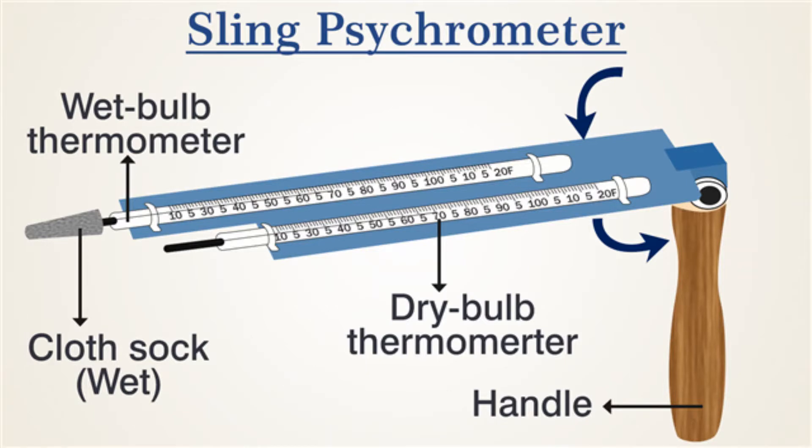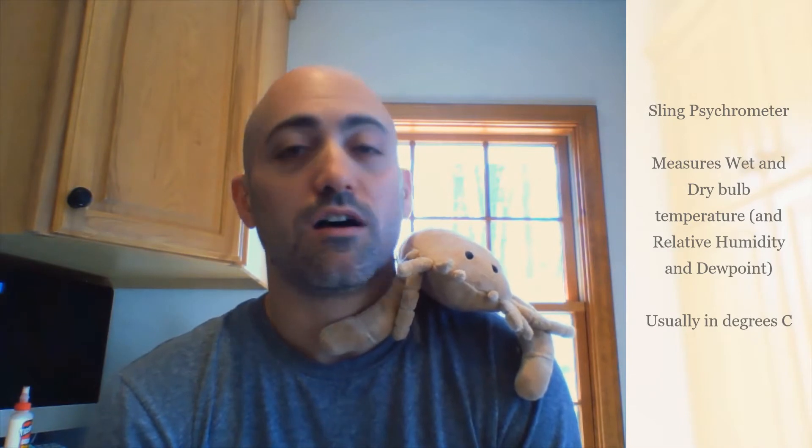Measuring temperature is the number one thing for weather forecasting. The second instrument is the sling psychrometer. It measures temperature too, but specifically the temperature when water is evaporating — what that thermometer reads. The more water that can evaporate, the colder that second wet bulb thermometer gets. That helps us figure out the relative humidity and the dew point. The psychrometer measures wet bulb and dry bulb temperature.